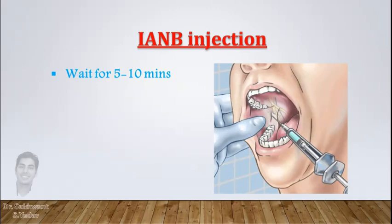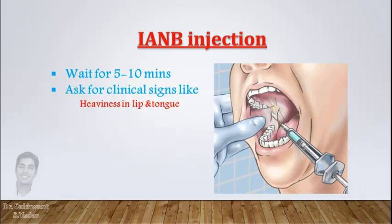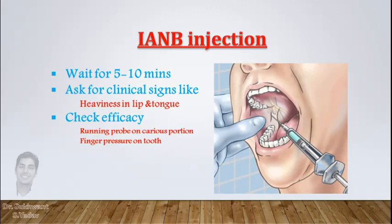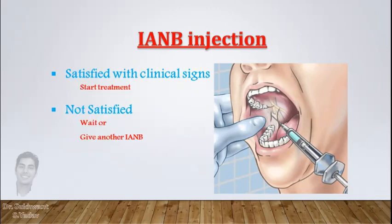While treating a mandibular molar, first give an inferior alveolar nerve block and wait for 5-10 minutes. Ask the patient about signs of anesthesia like heaviness in the lip and tongue. If it is there, check the efficacy of anesthesia clinically by running a probe slowly at the carious portion of the tooth, or compare the tooth tenderness by finger pressure before and after anesthesia. Some clinicians check it by pricking the interdental gingiva also. If you are satisfied with clinical signs of anesthesia, you can directly start the treatment. If not, wait for a while or give another block.